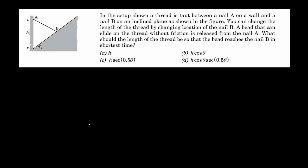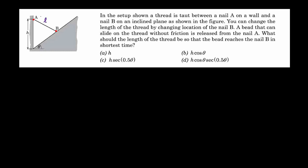In the setup shown, a thread is taut between a nail A on a wall and a nail B on an inclined plane as shown in the figure. We have two supports, nail A and nail B. You can change the length of the thread by changing the location of nail B. If L is the length of the thread from A to B, we can change this length by changing the location of point B on the inclined surface.